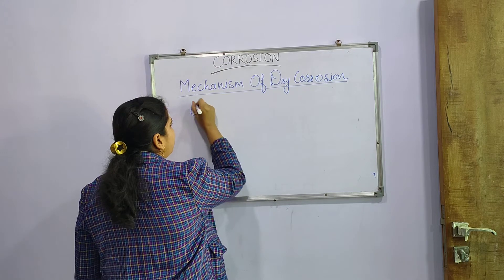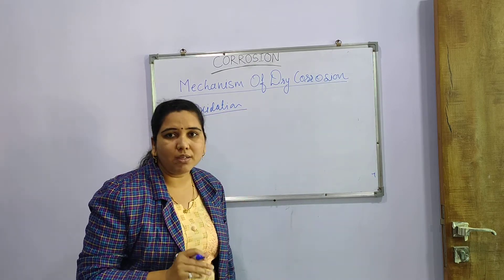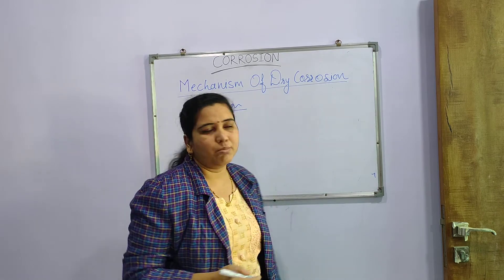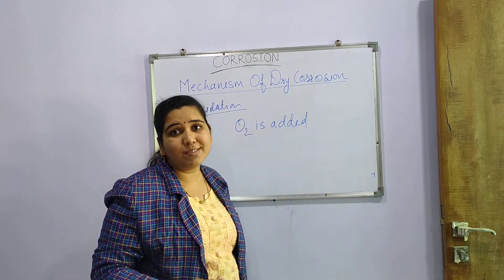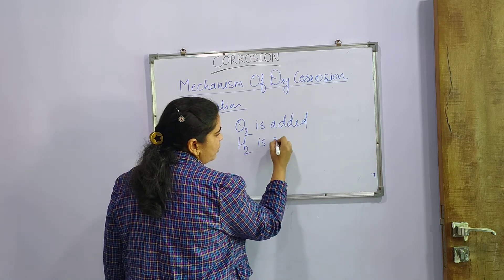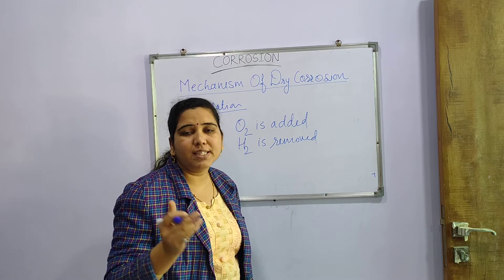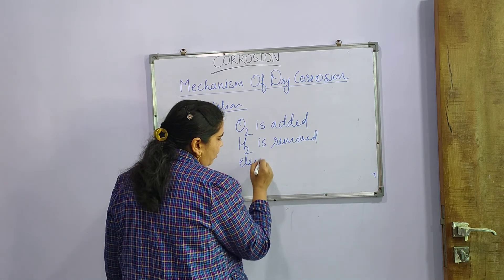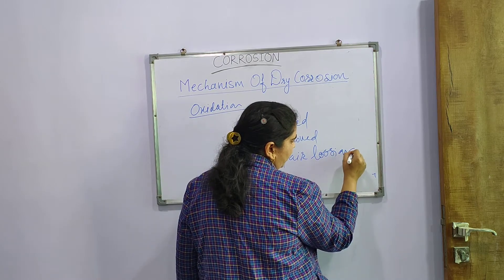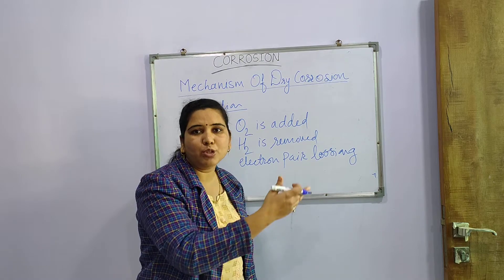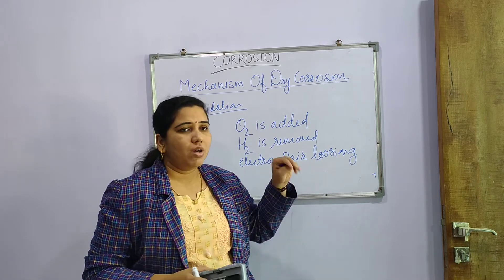We know that oxidation was studied in 12th standard. Oxidation is nothing but whenever oxygen is added — that is the process of oxidation. Whenever hydrogen is removed, it is called the process of oxidation. And whenever there is a losing of an electron pair, it is also called oxidation — meaning electron pair is removed or given to another species.